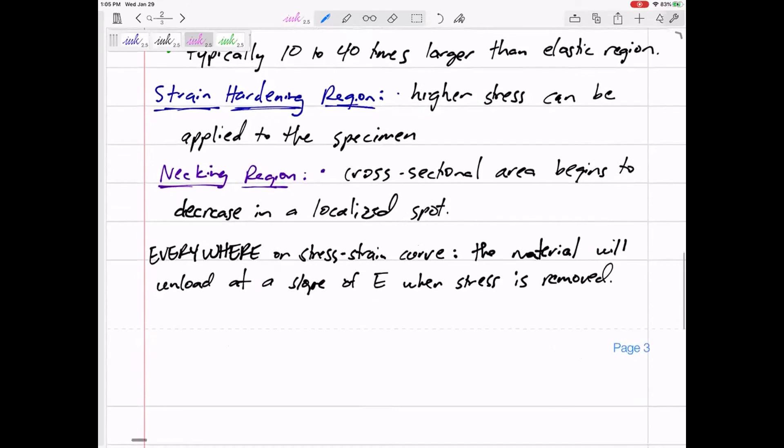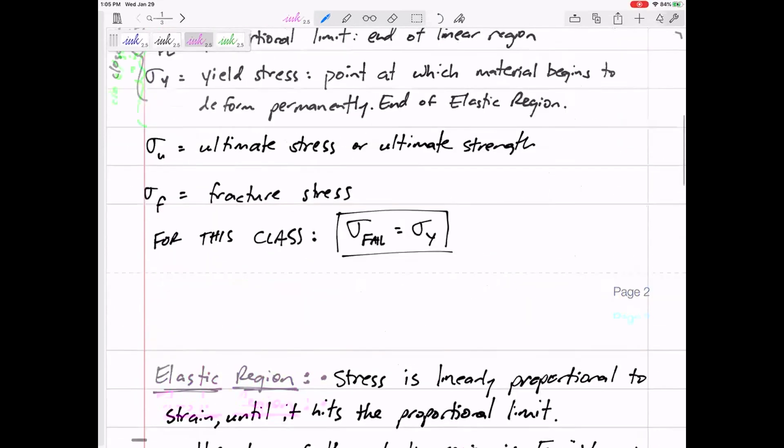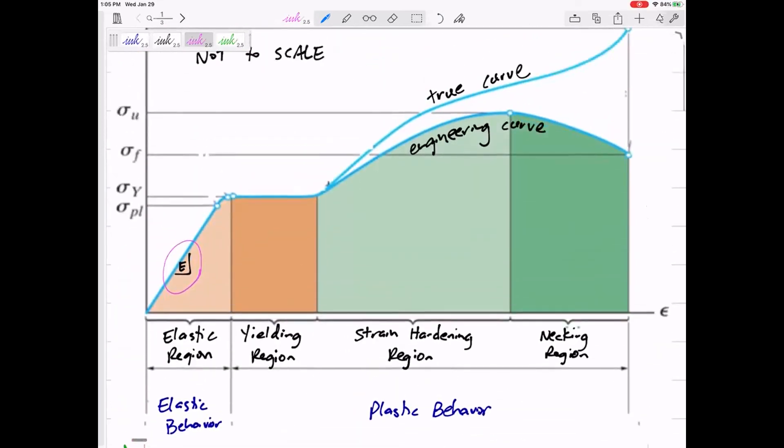All right, let's see what else is important. The material will unload at a slope of E anywhere. It will unload at a slope of E. So that means if we stress it to this level right here, it unloads right back to zero.